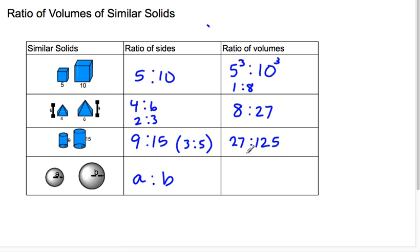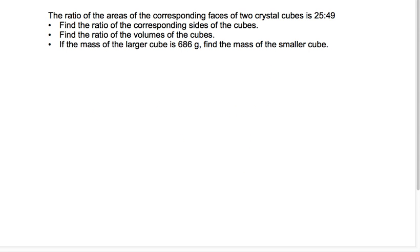So maybe if you're seeing a pattern here, by the time I get to the spheres, or really we could think about it for any similar solid, then if the ratio of my sides is A to B, then the ratio of the volume is going to be A to the third to B to the third. So let's go ahead and take this information and use it for some problems.